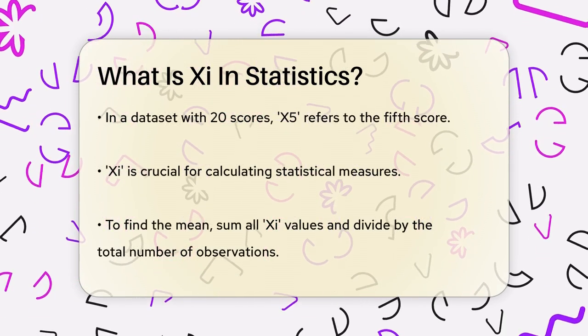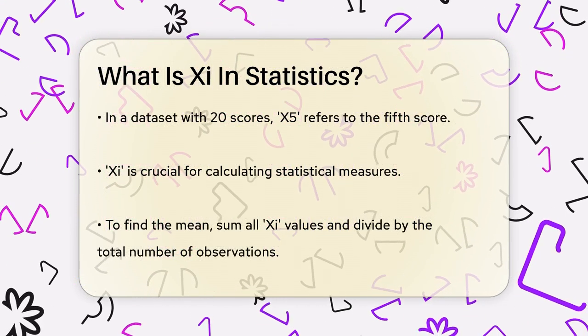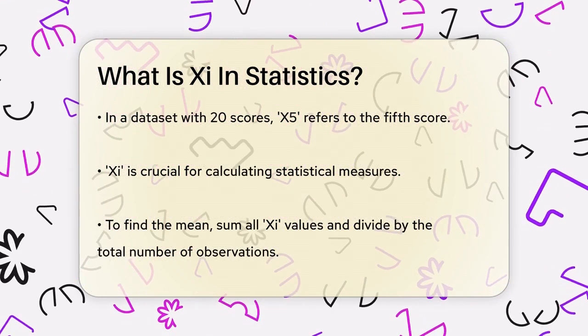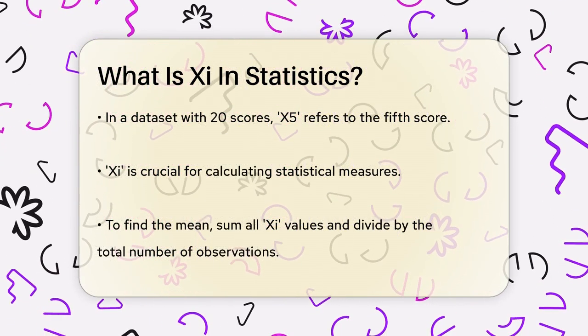When you see Xi, it's just a shorthand way of saying the ith data point. This i can range from 1 to n, where n is the total number of data points you have. So if you have 20 scores, i would go from 1 to 20.